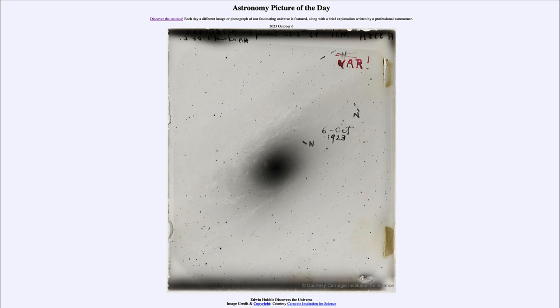And today's picture for October 6th of 2023 is titled Edwin Hubble Discovers the Universe. So what do we see here? Well, we see an image taken a little over a hundred years ago, and you can see the date there in the middle of this old photographic plate of the Andromeda galaxy for the 6th of October of 1923.